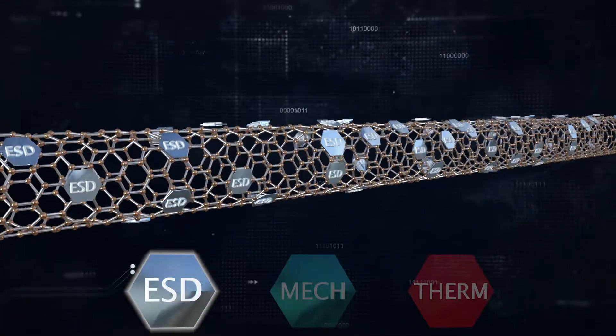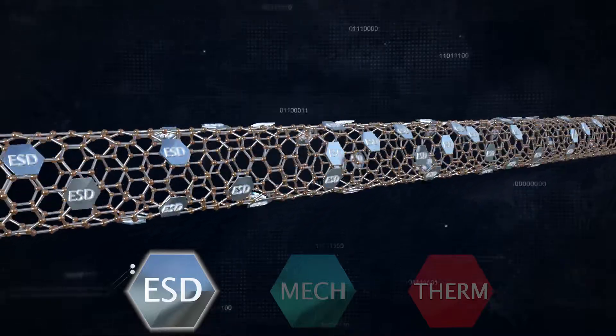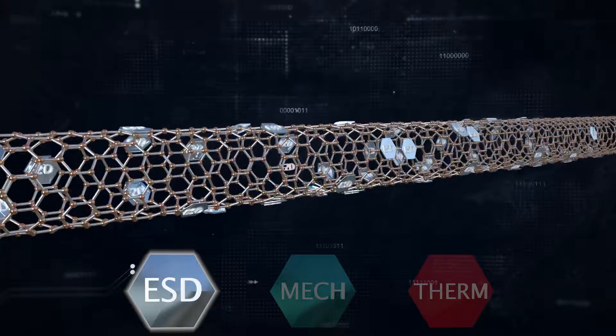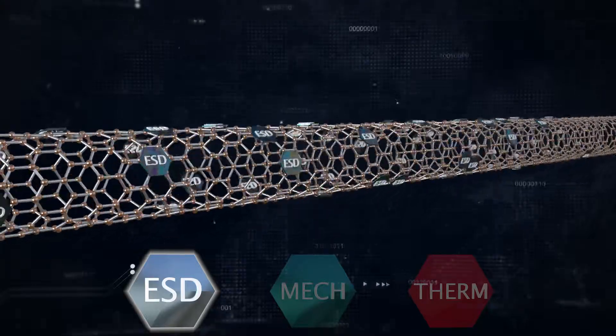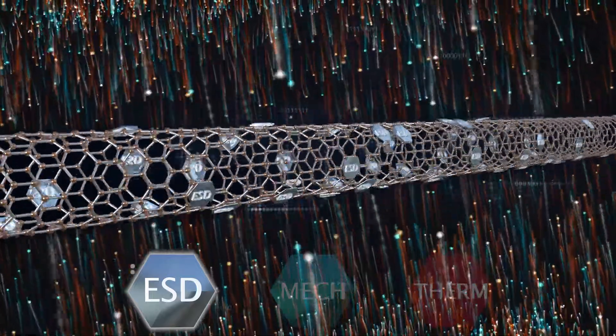Adding electrical properties like static dissipation, conductivity, shielding, and more. This tube has been functionalized for static dissipation to protect critical electronics, including shielding them from EMI.